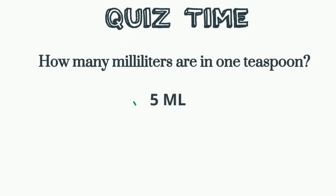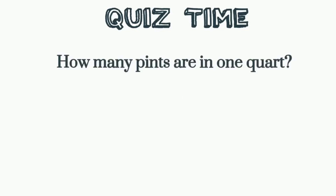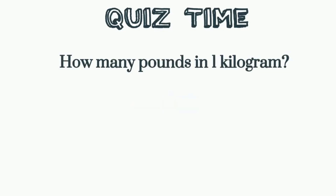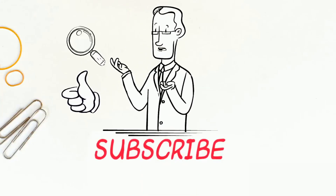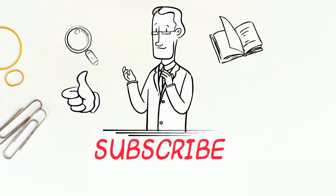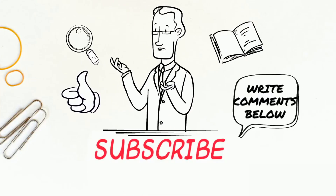Quiz time — three questions: How many milliliters are in one teaspoon? The answer is 5 milliliters. How many pints are in one quart? The answer is 2 pints. How many pounds are in one kilogram? The answer is 2.2 pounds. If you like this video and find it useful, please like and subscribe to my channel and write some comments. Thank you.